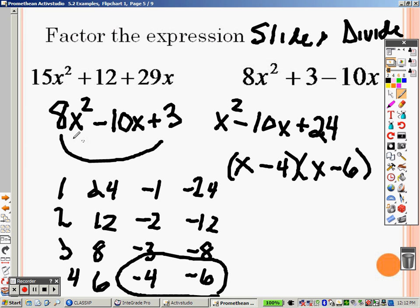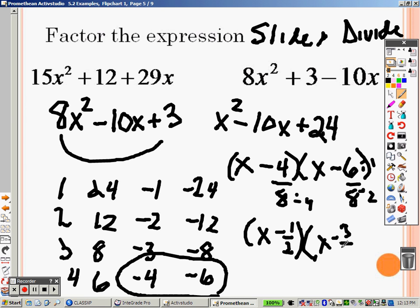But here's the problem. I slide by 8, so now I need to divide by 8. So with this, I can take a 4 out of the top and the bottom. So that gives me x minus 1 over 2. And this, I can divide each of those by 2. So that gives me x minus 3 over 4.